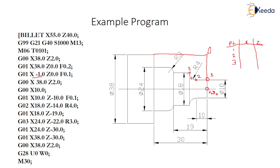So the third point: if I mean 18, X will be 18 and Z will be minus 14. So G02 will be there and radius will be 4. Then G01 — again it is going the straight path. Every time we are writing only the next point. From point 3 to 4, we are writing the fourth point. Then again G03 because it is anti-clockwise direction, and here it is clockwise direction.